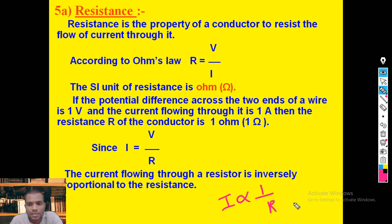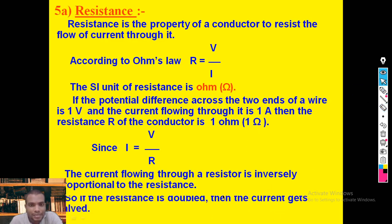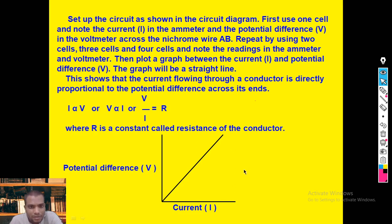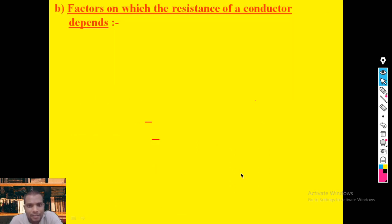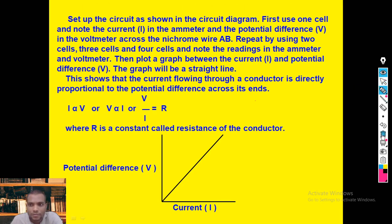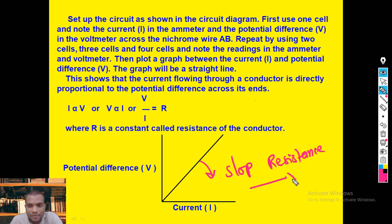Inversely proportional to resistance means: if resistance is more, the current value is less. That is why through a copper wire current flows more, but through a tungsten wire current flows less, because the resistance of tungsten is more. As a graphical representation, the potential difference versus current graph is a straight line, and the slope of that curve gives resistance.